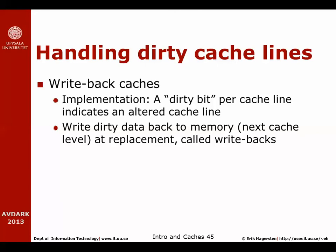Another issue you have to deal with is how to handle dirty cache lines. One implementation is called write-back caches. We add one extra bit per cache line, and the first time the CPU writes to that cache line we set the dirty bit — it's a sticky bit so it stays set. When we need to replace that cache line, the dirty bit tells us we need to perform a write-back: we take the value stored in the cache and write it back to memory. That's why it's called a write-back cache.